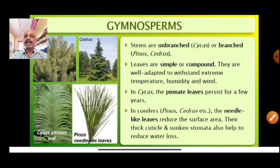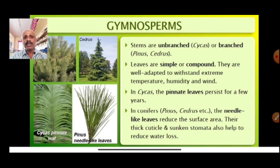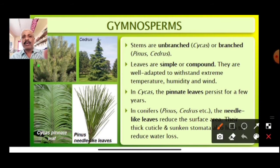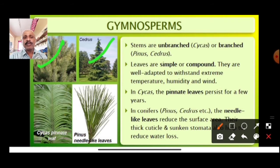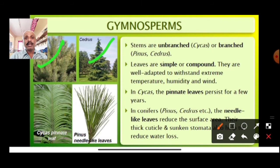Stems are unbranched in Cycas, but branched stems are available in Pinus and Cedrus. The leaves are simple or sometimes even compound. They are well adapted to withstand extreme temperature, humidity, and wind — they can grow even where there is scarcity of water.